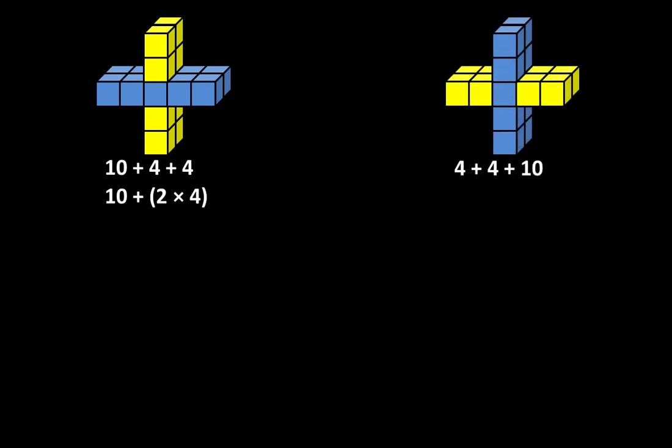Let's take a second look at how the structures were broken apart. Almost every time we find that there is more than one way to describe what we see. The first structure can be described as ten plus four plus four, or as ten plus two groups of four. The second structure can be described as four plus four plus ten, or as two groups of four plus ten.